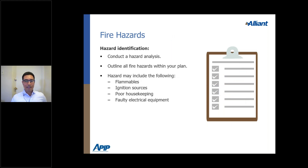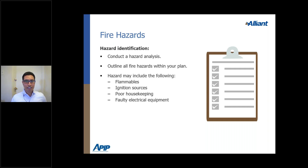Hazard identification should include: identification of flammables, possible ignition sources, poor housekeeping, and faulty electrical equipment. Don't only look for these specific items — think outside the box and look for other potential hazards that could lead to possible fires or combustions.